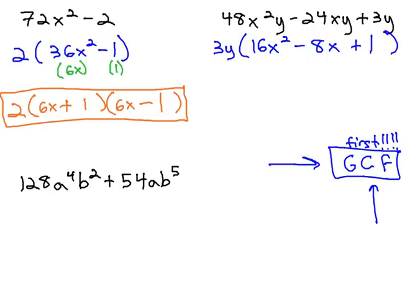Noticing we have three terms in this parentheses, we're probably going to keep factoring using the AC method. 16 times 1 means we're multiplying to 16 and adding to negative 8. The pair of numbers that makes that work are negative 4 times negative 4, and negative 4 plus negative 4.